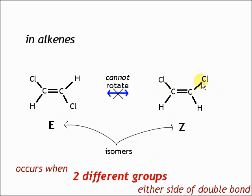When we've got two groups on the same side as each other, that's Z, so Z on the same side, and E is the other isomer when you've got them coming across.